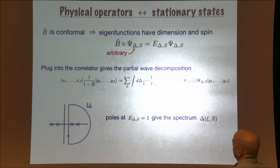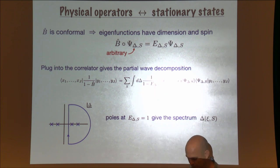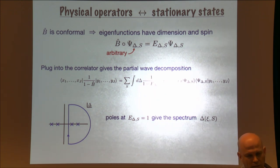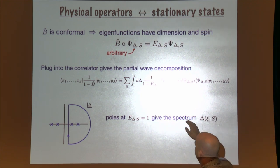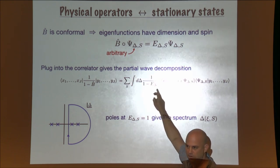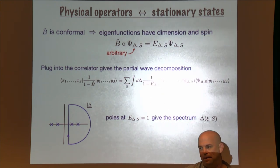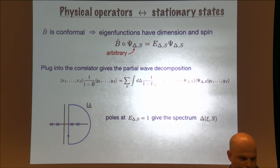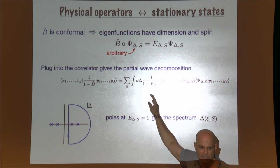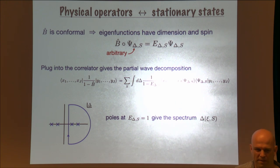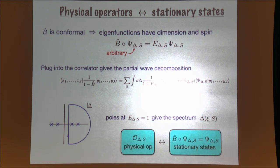The nice thing is that we can write this very explicitly. The physical data for the physical operators can be complex — the expression for the eigenvalue E as a function of dimension and spin is real, but we take the parameter xi (the 't Hooft coupling) to be complex in general, since there is no reason to take it real in this non-unitary theory. When one solves this equation, the poles would be complex. We conclude that physical operators are in one-to-one correspondence with stationary wave functions under the graph building operator.